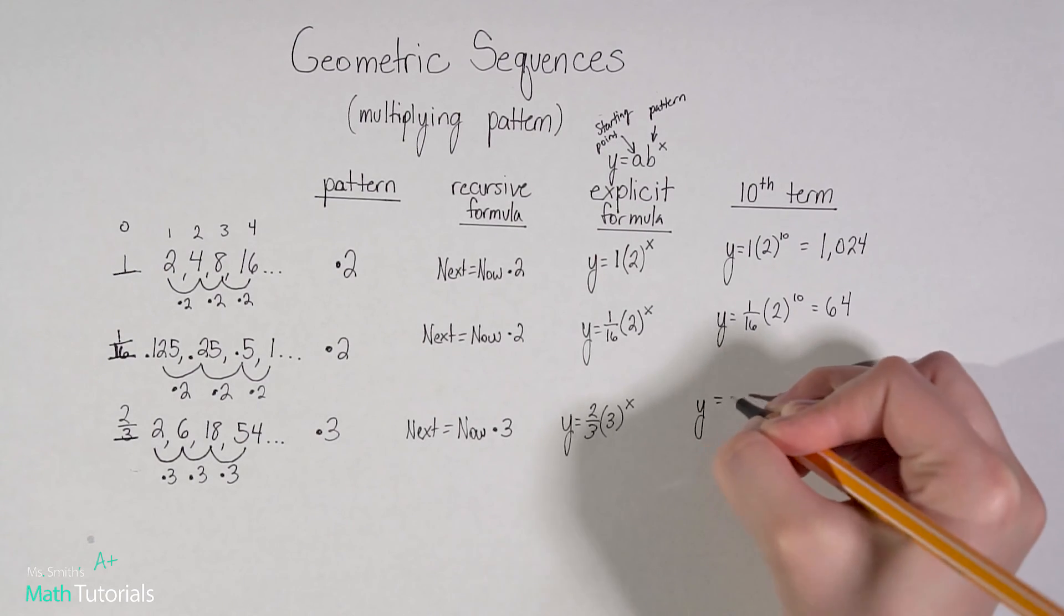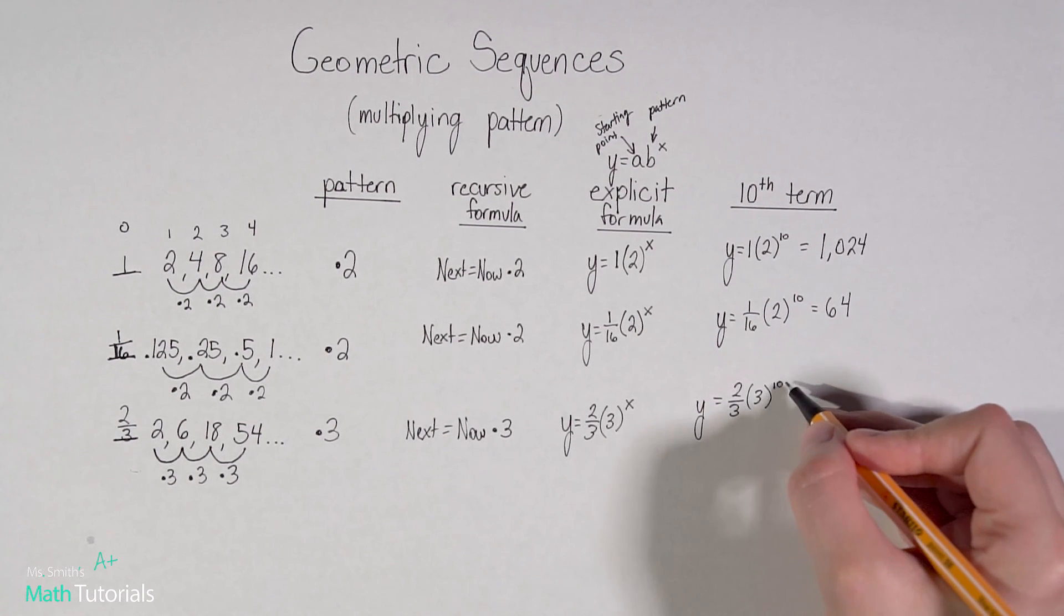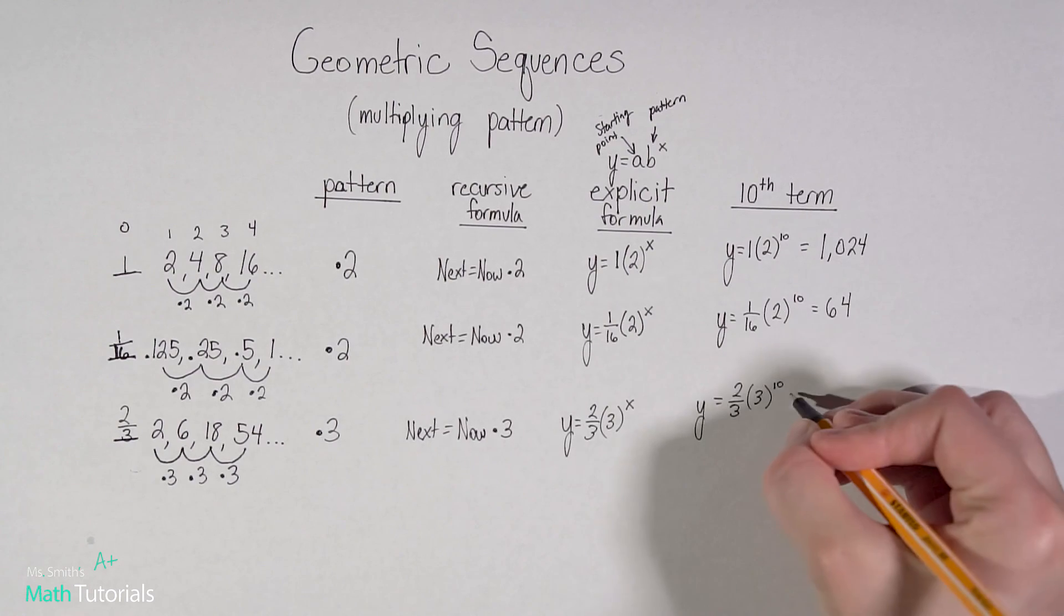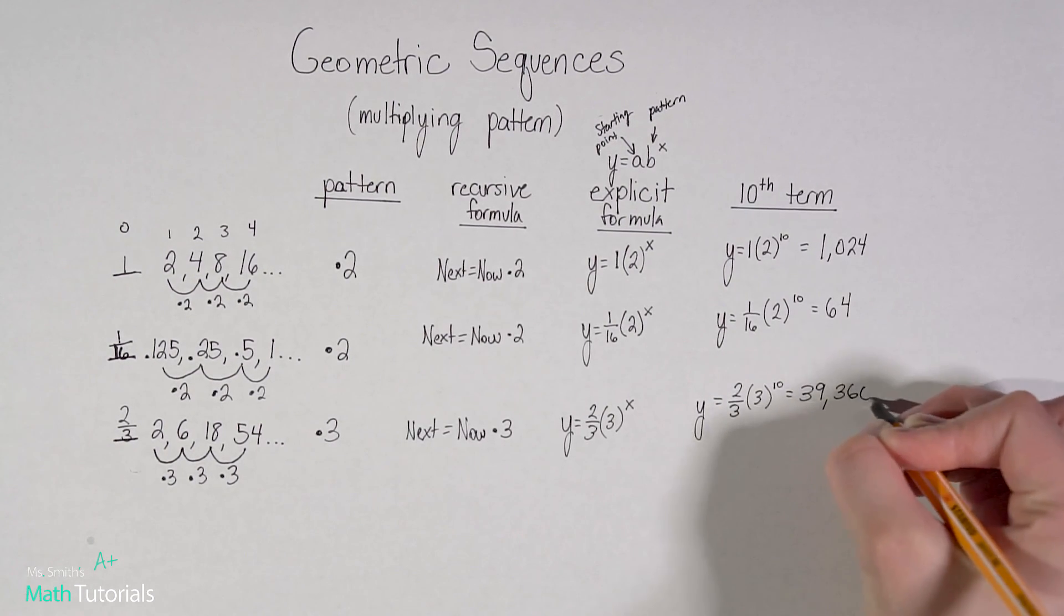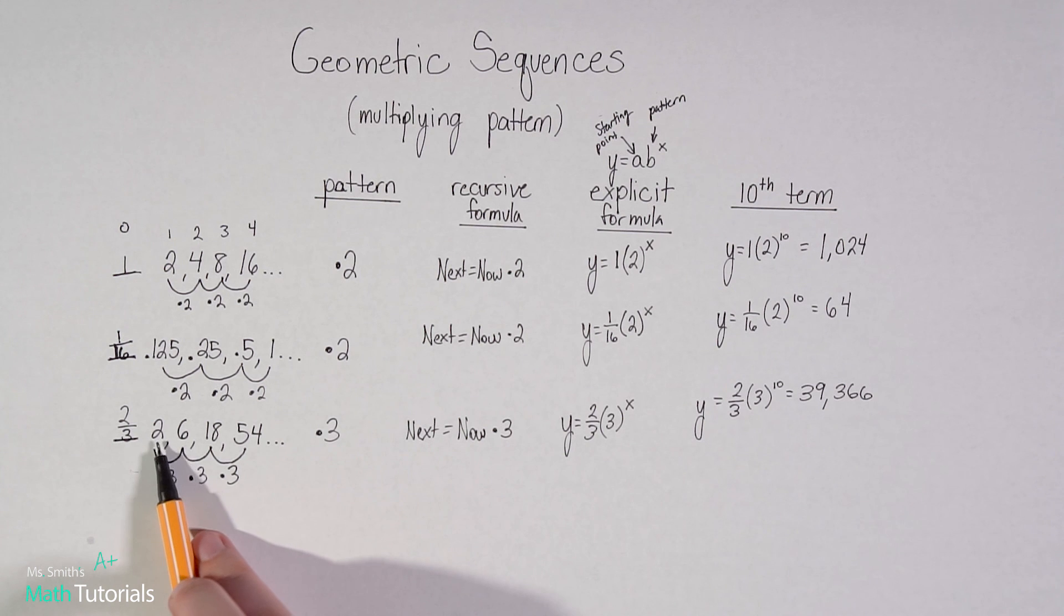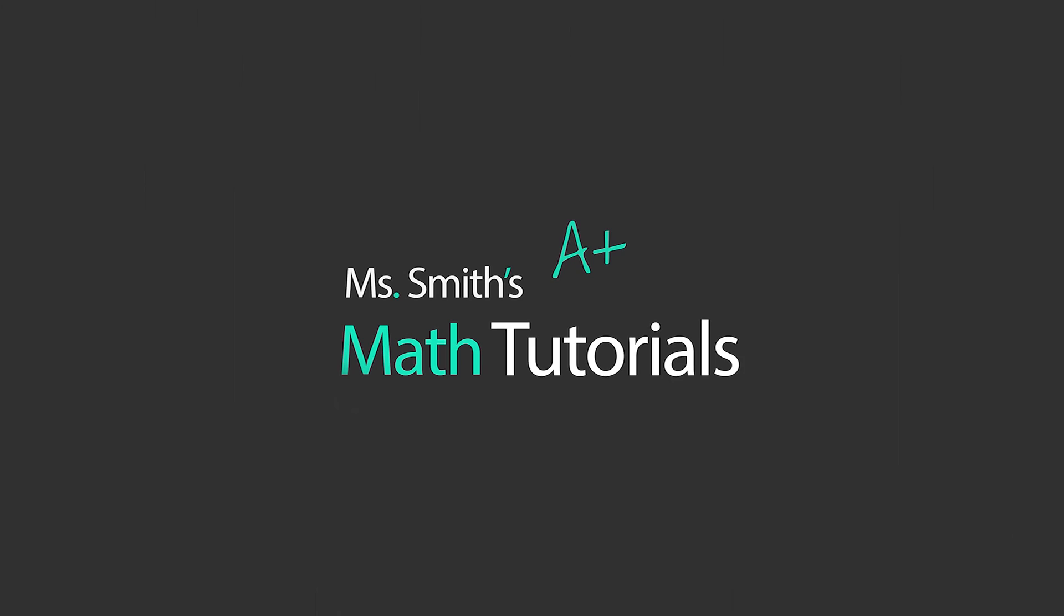Go ahead and sub in. In this case, we're saying 10, because we want the 10th term. If I wanted the hundredth term, I'd put in 100. If I wanted the 5,000th term, I could put in 5,000. It's whatever you want. So 2/3 times 3, I'm just putting this into my calculator to the power of 10. Fairly large number. 39,366. That would be the 10th term. See how big that got? We went from 2, to within 10 terms being at 39,366. So huge jumps there. This has been Ms. Smith's Math Tutorials.